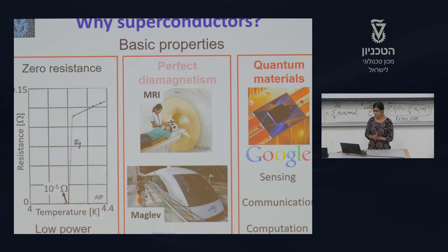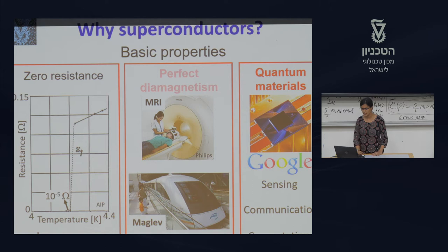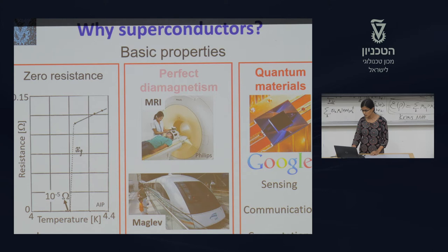What are superconductors? Superconductors are materials which undergo zero resistance under critical temperatures. They have many applications currently in medical applications like MRIs, in high speed trains, and also in sensing, communication, and computation devices.